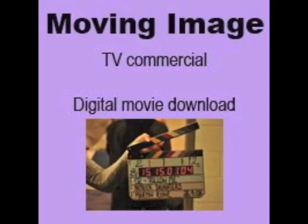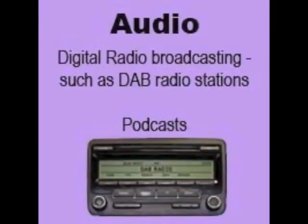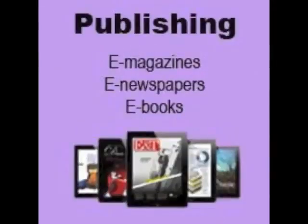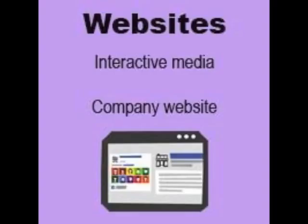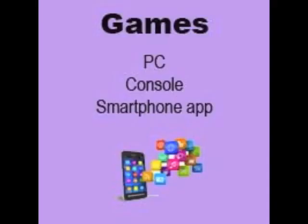Examples of digital moving image products are a TV commercial or advert and a digital movie download. Examples of digital audio products are digital radio broadcasts such as those on DAB stations like Radio One Extra and podcasts. Examples of digital publishing products are e-magazines, e-newspapers and e-books. Examples of digital web products are interactive media such as YouTube and websites. YouTube is interactive because the user has to make decisions and choices in terms of what videos they want to watch and they can also make comments. Examples of digital games are those on PC, consoles and smartphone apps.